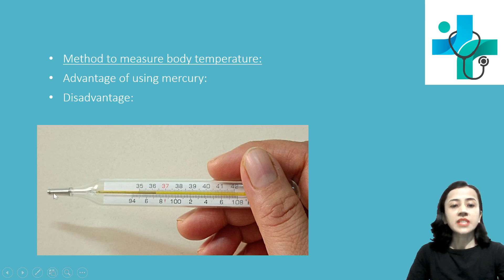When the bulb touches a body, heat flows from body to the mercury which is there in the bulb and this mercury expands. As we all know that heat flows till the temperature of the body and the thermometer are same. So you can measure the body temperature by measuring the temperature or the expansion of the mercury.